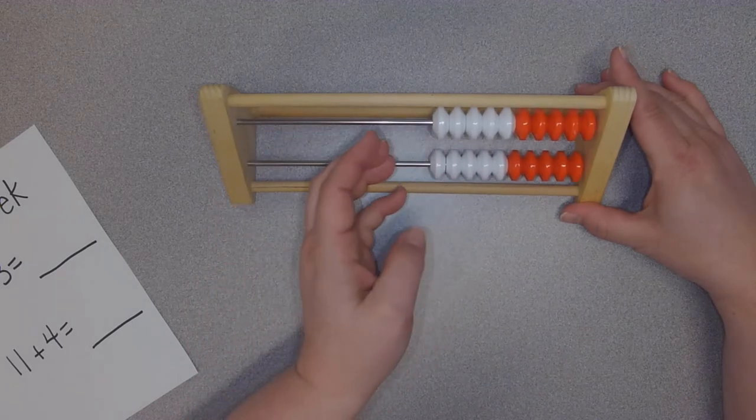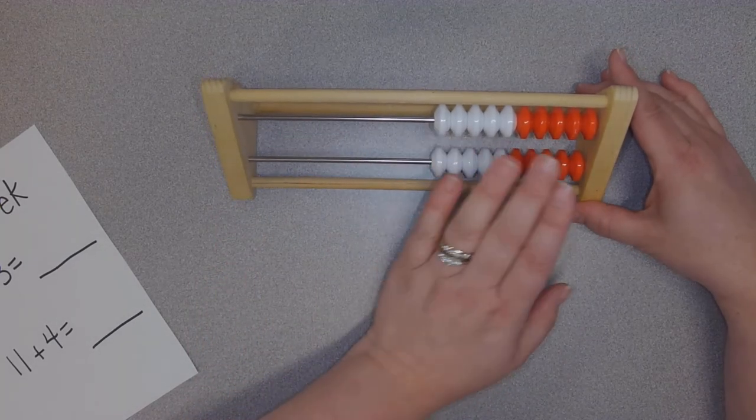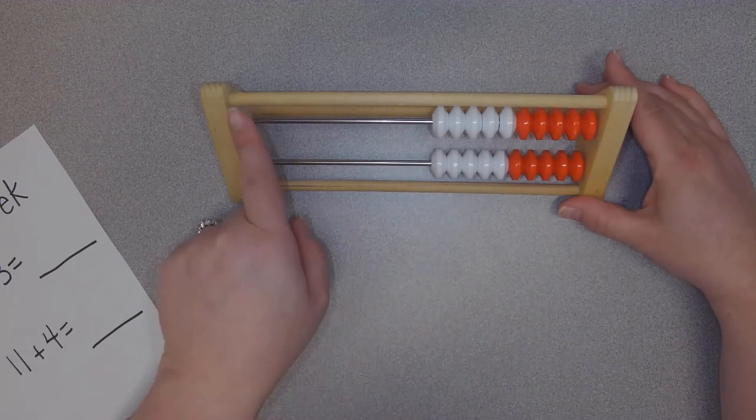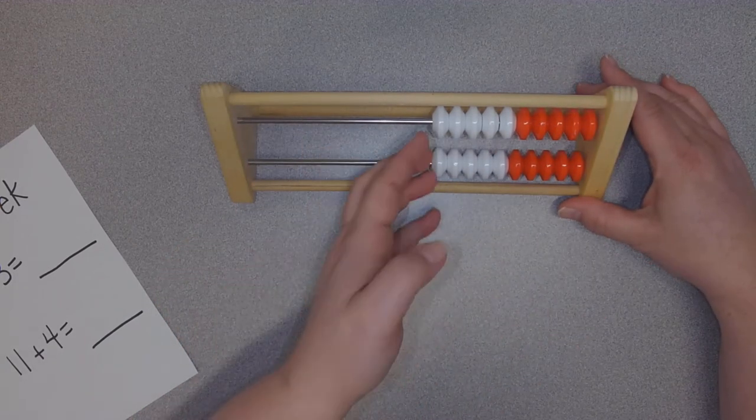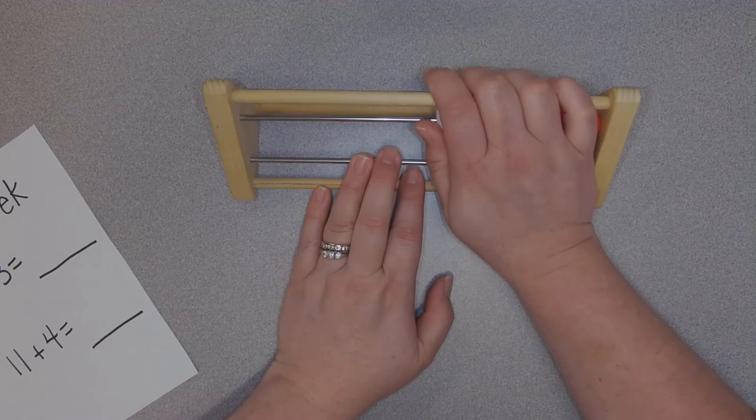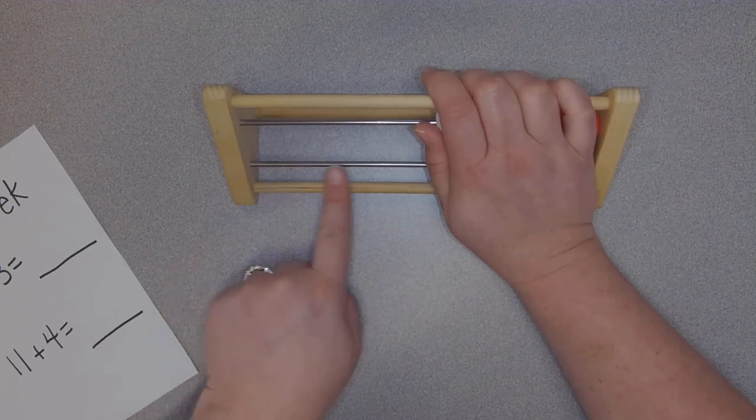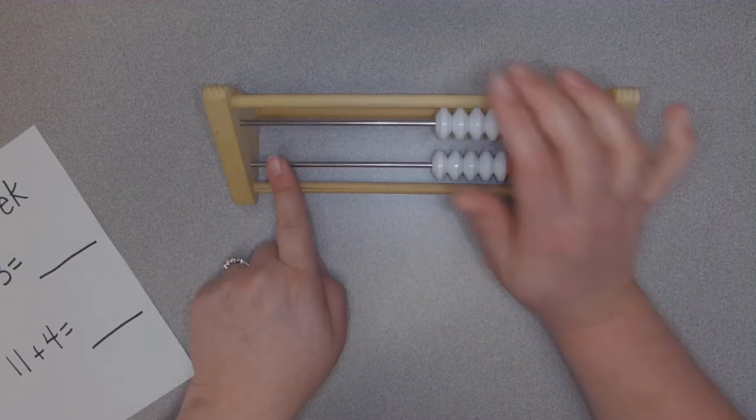The way we use a Rekenrek is we push all the pips over to the right hand side, and we do our equation over here. This is the left over side, the part that we don't pay attention to. We build over here and we add over here.